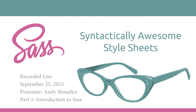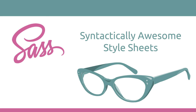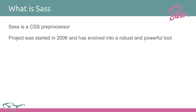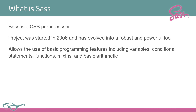SASS, which stands for Syntactically Awesome Style Sheets, is a CSS preprocessor. The project is about nine years old — a little rough when it first started, but pretty solid these days. It essentially allows you to add into the process of creating CSS some basic programmatic features: variables, conditional statements, functions, mixins, basic arithmetic, nesting, and things like that.